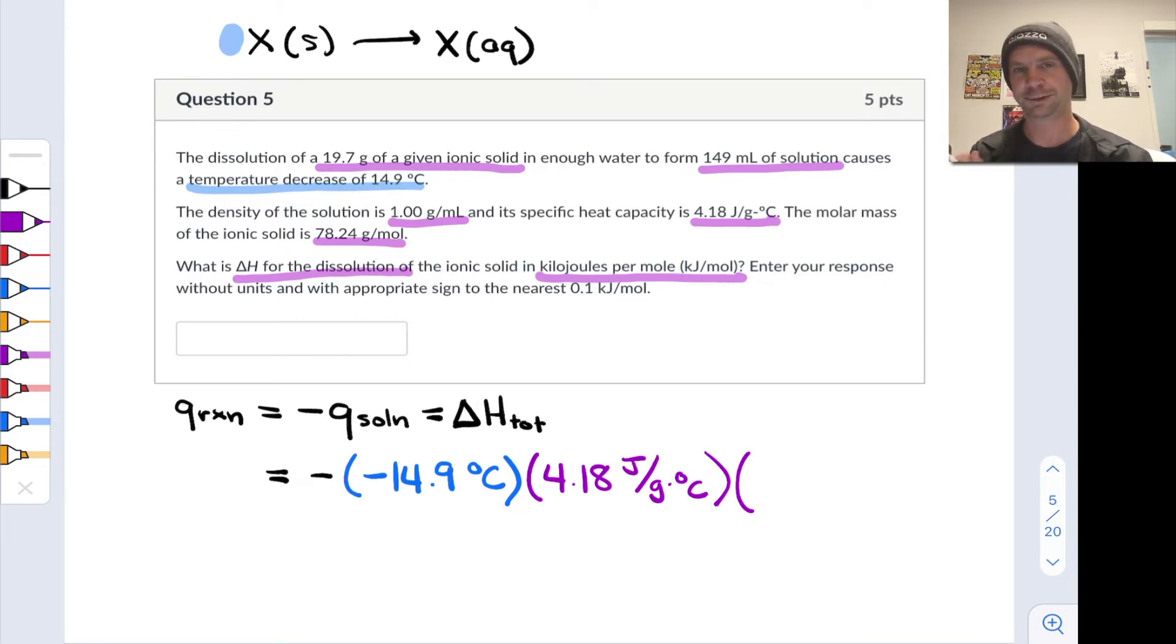What is the mass of the solution? Well, just to save us a little bit of space, we've got 149 milliliters of the stuff. We know its density is 1 gram per milliliter, and so we know that the mass is 149 grams of solution. So this is going to correspond to some quantity of heat. I'm actually going to take this quantity of heat and call it equal to delta H total.